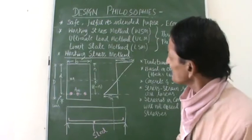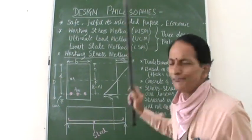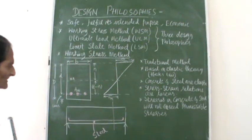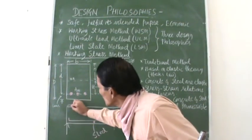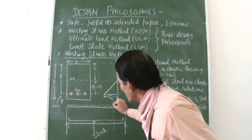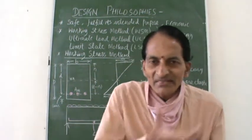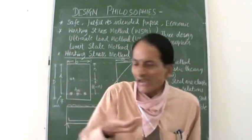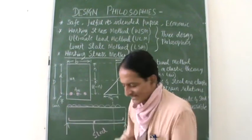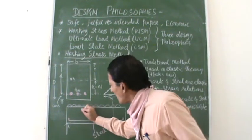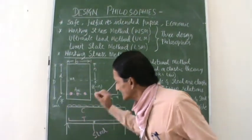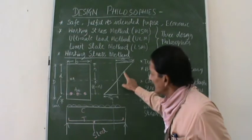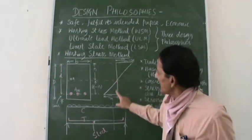So this is a brief explanation of the cross-section of the beam. Now, what exactly is the Working Stress Method? When I start loading this beam, the beam tries to bend. Tensile stresses develop at the bottom and compressive stresses at the top. If I draw the stress distribution diagram, it will show that the topmost compression fiber reaches the maximum compressive stress.